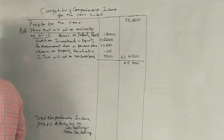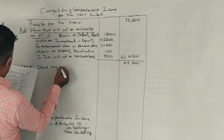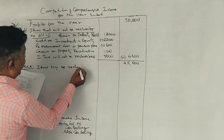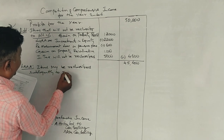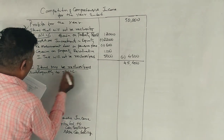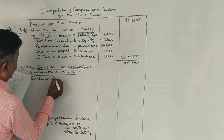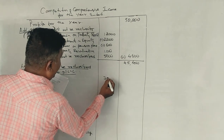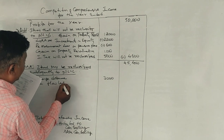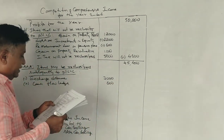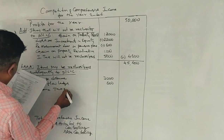Items that may be reclassified subsequently to profit and loss account. First item: exchange difference on translating foreign operations — that is a loss. Second: cash flow hedger — loss, 600. Third: income tax related to items that may be reclassified — that is 2,000.